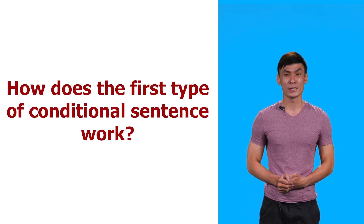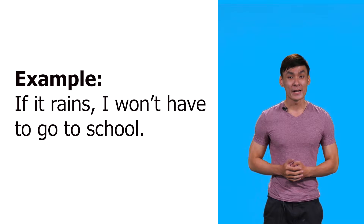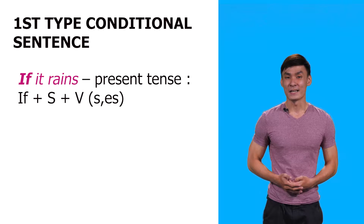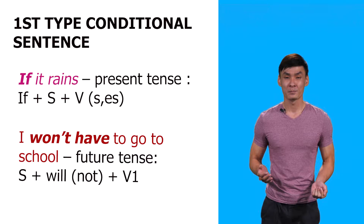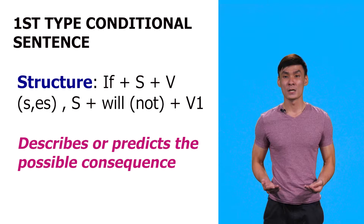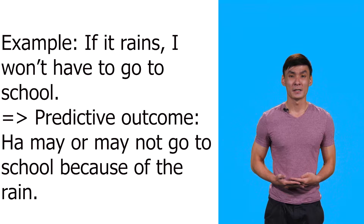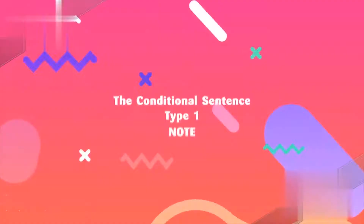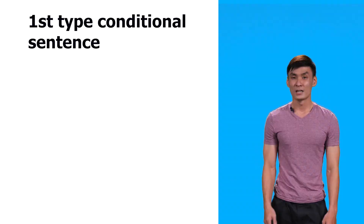Let's look at how the first type of conditional sentence works by playing back what Ha just said earlier: 'If it rains, I won't have to go to school.' The if-clause is in present tense and the main clause is in future. The sentence describes a predictive or possible consequence — the consequence may happen or may not happen in the future. In the future, Ha may not go to school because of the rain. That may happen.